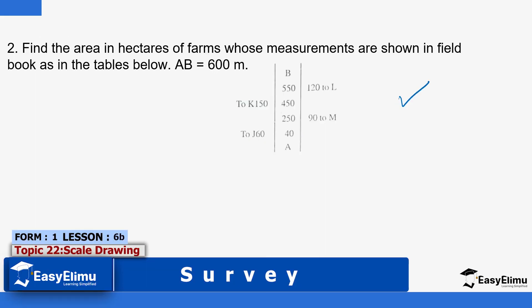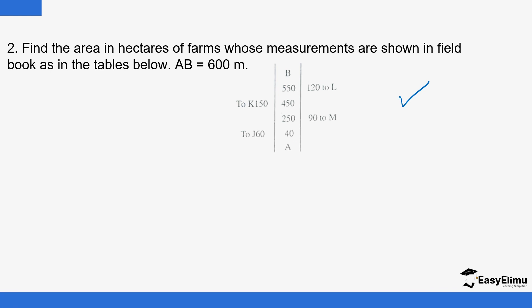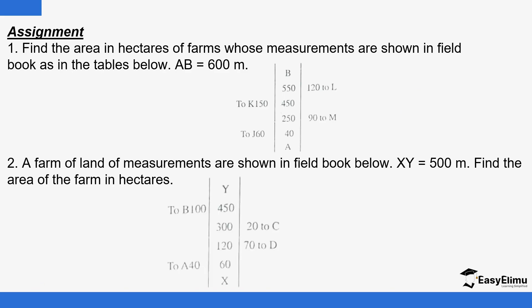Here is a question you can attempt. The baseline is AB. We have the first offset on the left, the second on the right, then left and right again. The total length of the baseline is 600 meters. You can attempt this together with the other assignments. Otherwise, that marks the end of the lesson — until next time.